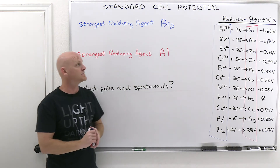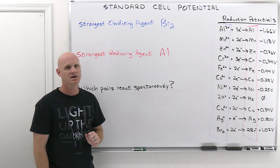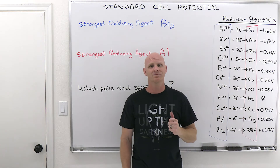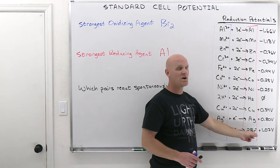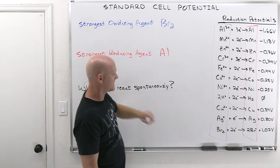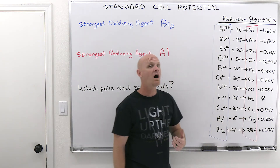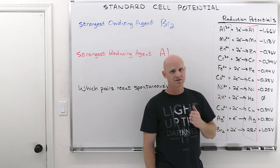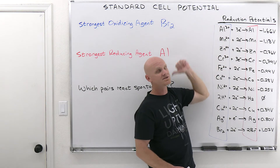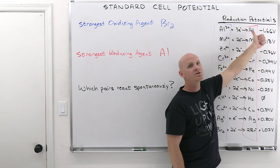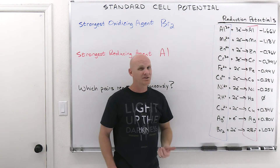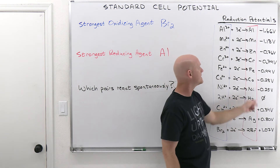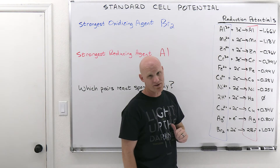Therefore, the strongest reducing agent is aluminum — not aluminum 3+. Lots of students memorize that the most negative value on the table gives the strongest reducing agent, which points to the correct reaction, but you must also identify the correct species: it's the reactant in the reverse oxidation reaction. All your oxidizing agents are the reactants in reduction half reactions; all your reducing agents are the reactants in the reverse oxidation half reactions.